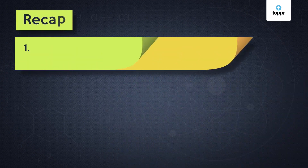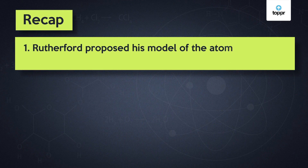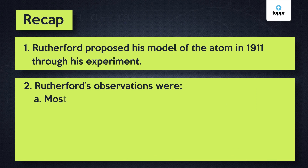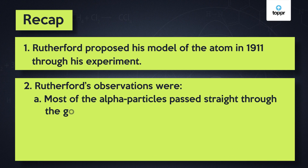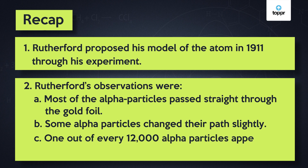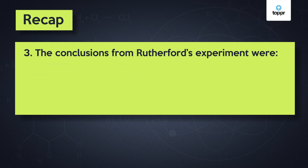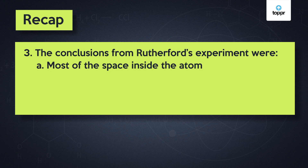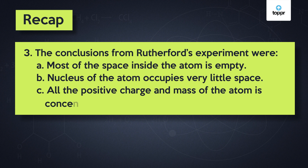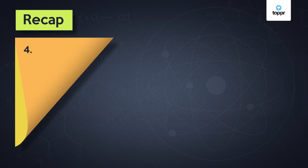Let's recap. Rutherford proposed his model of the atom in 1911 through his experiment. Rutherford's observations were: most of the alpha particles passed straight through the gold foil; some alpha particles changed their path slightly; and one out of every 12,000 alpha particles appeared to rebound by 180 degrees. The conclusions from Rutherford's experiment were: most of the space inside the atom is empty, and the nucleus of the atom occupies very little space.